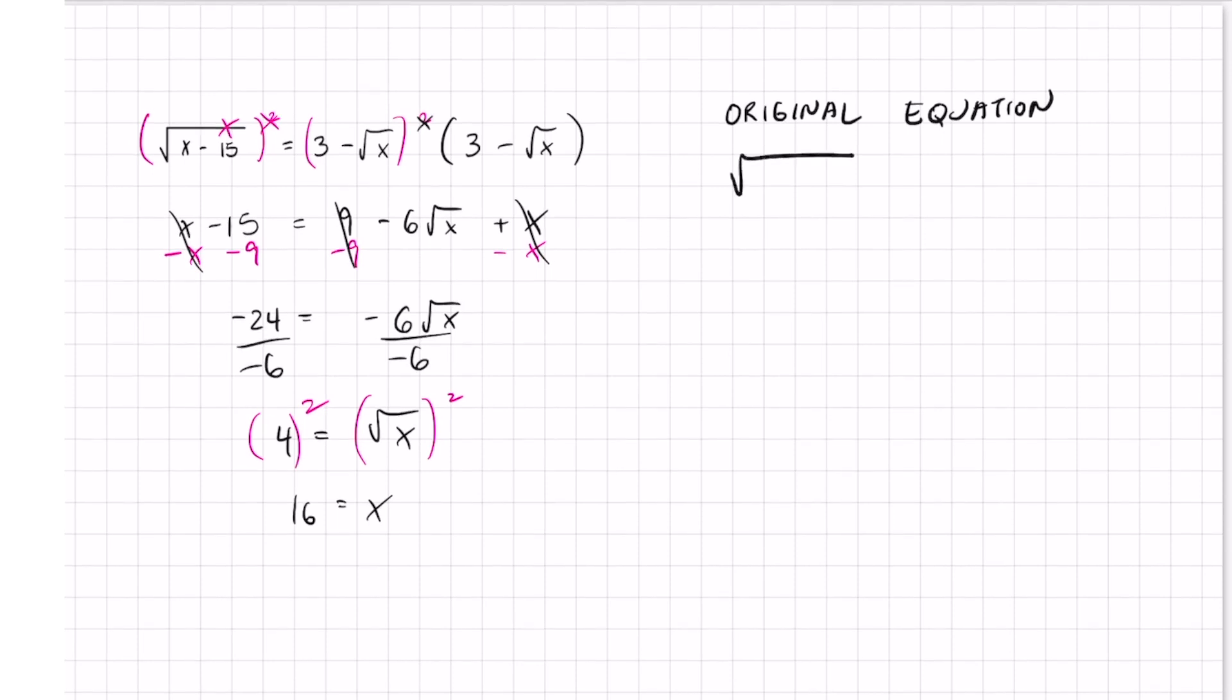The original equation was the square root of x minus 15 equals 3 minus the square root of x. If I plug in my answer, which is 16, into the equation: 16 minus 15 equals 1, square root of 1 equals 1. On the right: 3, and the square root of 16 is 4, so 3 minus 4 is negative 1. That gives us negative 1 equals 1.